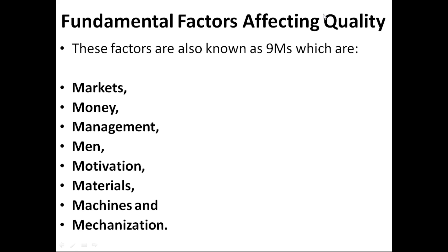The next one is mechanization. Mechanization means automation. While machines refers to whether equipment is latest or obsolete, mechanization refers to whether we are using an automated or manual system. If we are using a manual system, chances of error will be higher, leading to poor quality. But if we are using an automatic system, we can preset all parameters to get consistent output, achieving a good quality level.